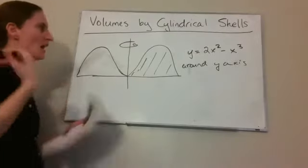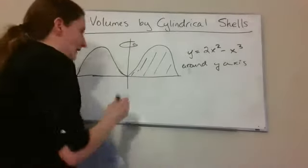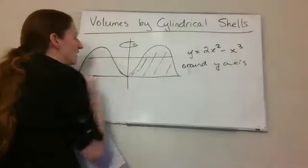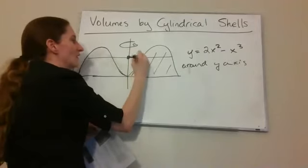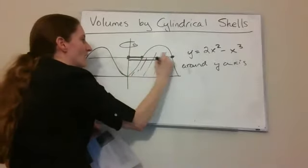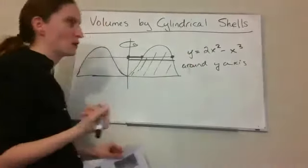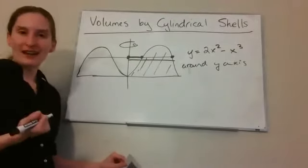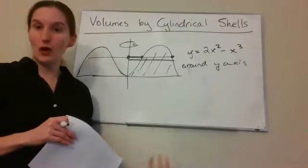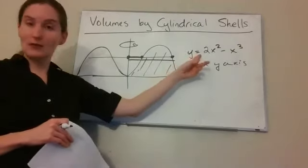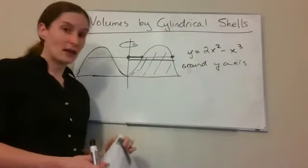You might think: let me just slice it like we just learned and do this using a washer, since we'd be slicing perpendicular to the y-axis and getting a washer. The problem is that to find the inner radius and the outer radius, we would have to solve y equals 2x squared minus x cubed for x in terms of y — and that is incredibly difficult to do.